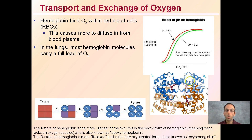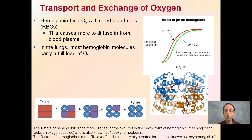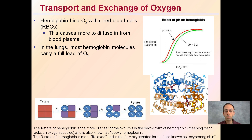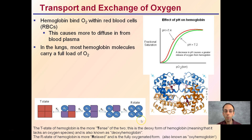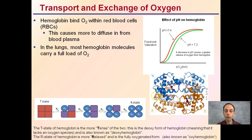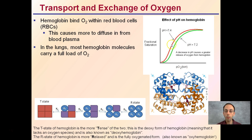When hemoglobin is binding in the red blood cells with oxygen, this will cause more oxygen to diffuse in from the blood plasma. In the lungs, most hemoglobin molecules carry a full load of oxygen — that can be called our R state, the relaxed state. This is when the hemoglobin is fully oxygenated, and because it's occurring through diffusion, as we bind oxygen to hemoglobin, more can diffuse in from the blood plasma. pH also influences that.